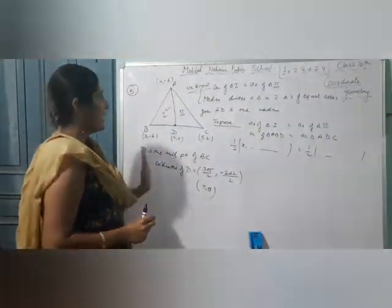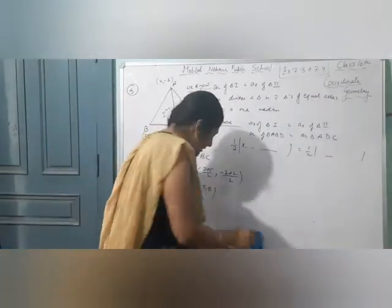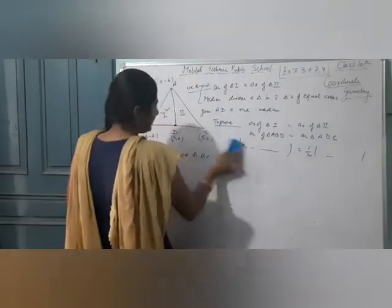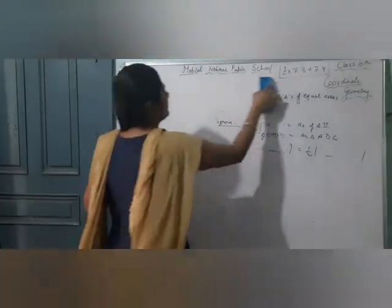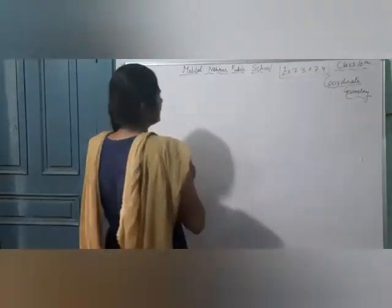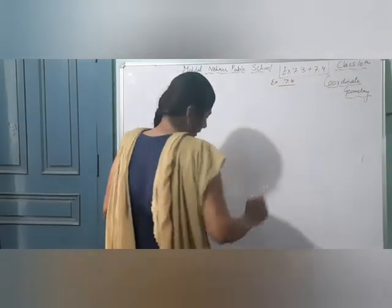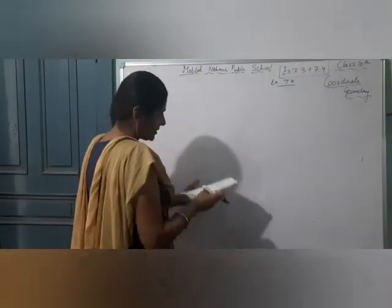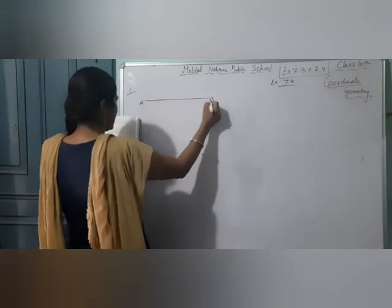Check that the areas of both triangles are equal. Now moving to Exercise 7.4.